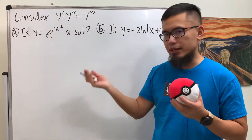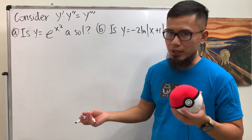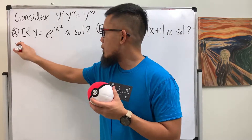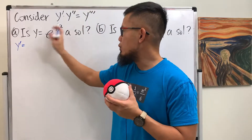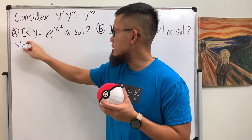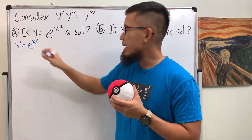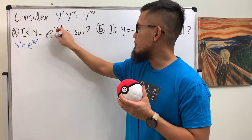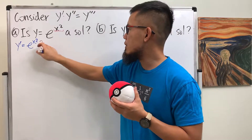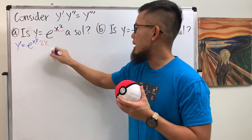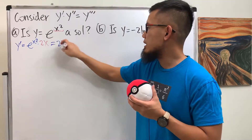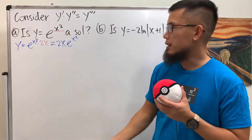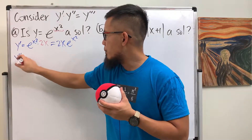Let's go ahead and do the work. y prime is just the first derivative — e to the x squared repeats, so we have e to the x squared, but don't forget the chain rule, so we multiply by the derivative of x squared which is 2x. So y prime equals 2x · e to the x squared.